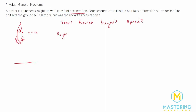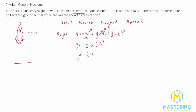For the rocket's height, the equation we'll use is: y_final = y_initial + v_initial × t + ½ × a × t². The initial y is zero since it leaves from the ground, and the initial velocity is also zero. That leaves us with y_final = ½ × a × t². Using t = 4 seconds, y_final = ½ × a × 16, which simplifies to 8 times the acceleration of the rocket.